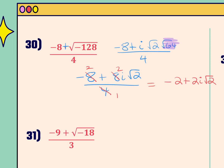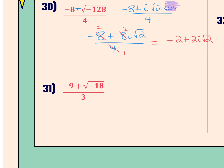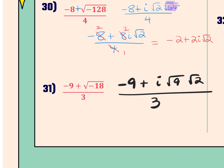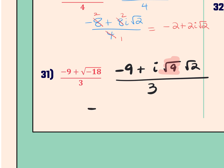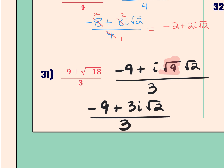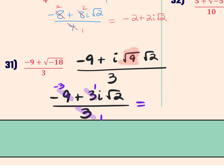For example 31: I'm going to break down the negative 18. I have negative 9 plus i times the square root of 18, breaking 18 into 9 times 2, over 3. I can now square root the 9 to get 3. So I have negative 9 plus 3i square root 2, all over 3. Dividing all terms by 3 — this becomes 1, 1, and negative 3. So the final answer is negative 3 plus i square root 2.